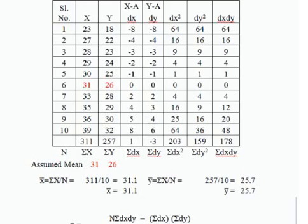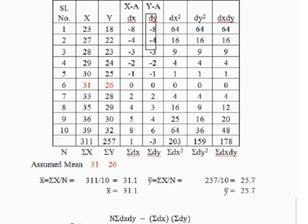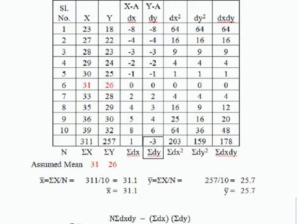And 32−26=6. Note that when the assumed mean is greater than the value, we assign a minus sign. Adding all positive and negative dx values separately and subtracting gives sigma dx = −3.